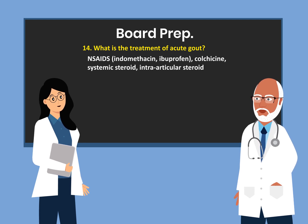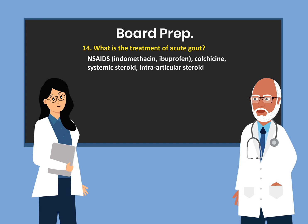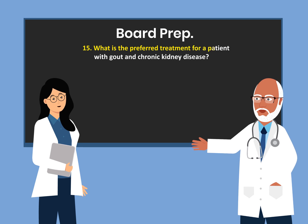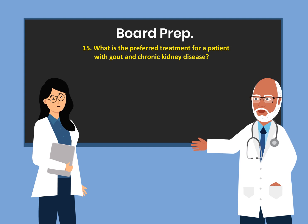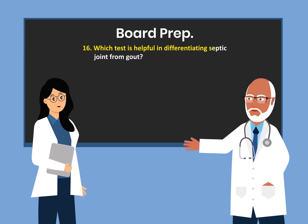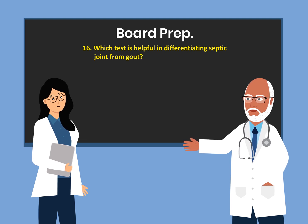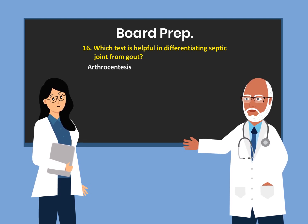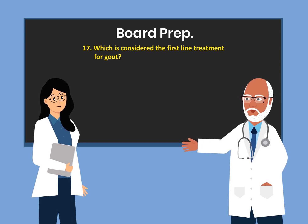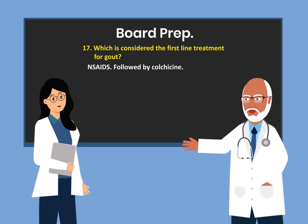What is the treatment of acute gout? NSAIDs including indomethacin and ibuprofen, followed by colchicine. Next, systemic steroid or intraarticular steroid. What is the preferred treatment for a patient with gout and chronic kidney disease? Intraarticular injection. Which test is helpful in differentiating septic joint from gout? Arthrocentesis. Which is considered the first-line treatment for gout? NSAIDs followed by colchicine.